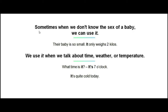Sometimes when we don't know the sex of a baby, we can use 'it'. For example: 'Their baby is so small. It only weighs two kilos.' We also use 'it' when we talk about time, weather, or temperature. For example: 'What time is it? It's seven o'clock. It's quite cold today.'